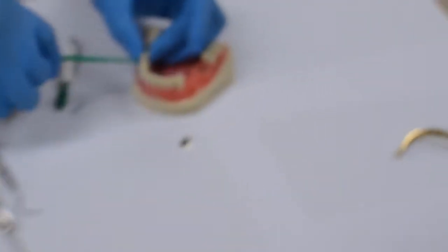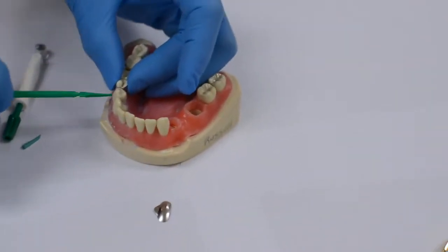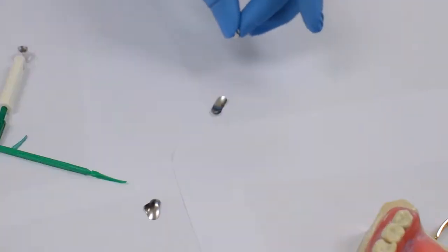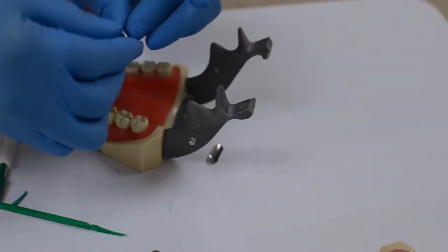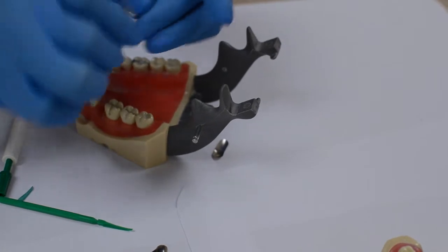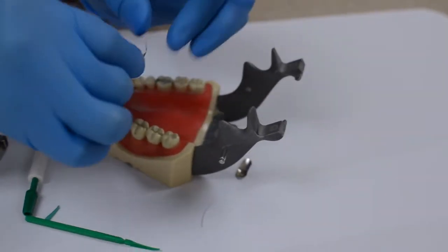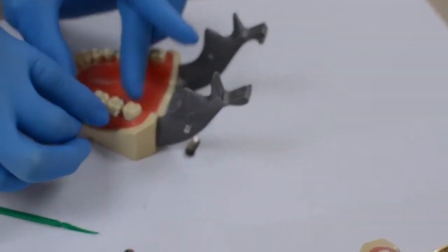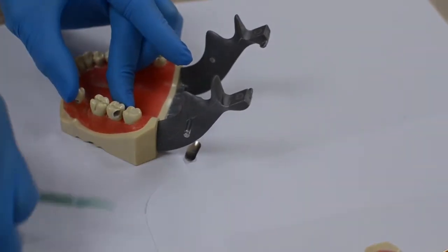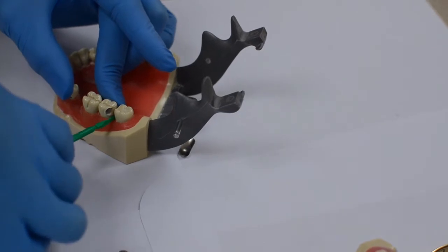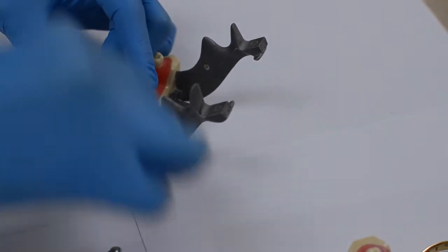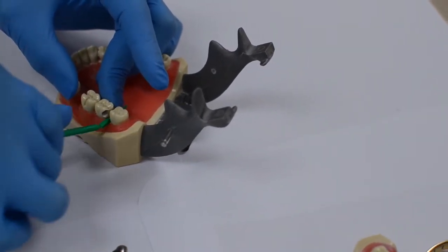Next thing we're going to do, I'm going to grab, and this one's too small. Let's try the largest one we have. The embrasure spaces on these denteforms is humongous. So let's use another denteform. Let's try this one. There we go. That slides in there.